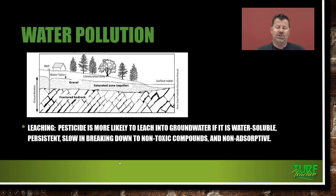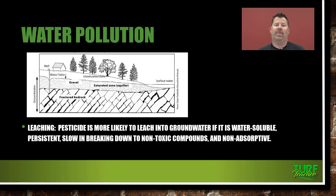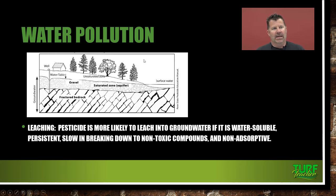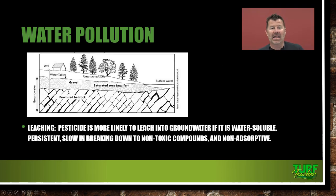Pesticides are more likely to leach into groundwater if the pesticide is water-soluble, persistent, slow in breaking down to non-toxic compounds, and non-adsorptive. So it's going to get into our groundwater if it has those characteristics. Check it out and read the label. Maybe there's a least-damaging pesticide that's out there — one that's not so persistent, not water-soluble, faster-breaking-down, and that is adsorptive.